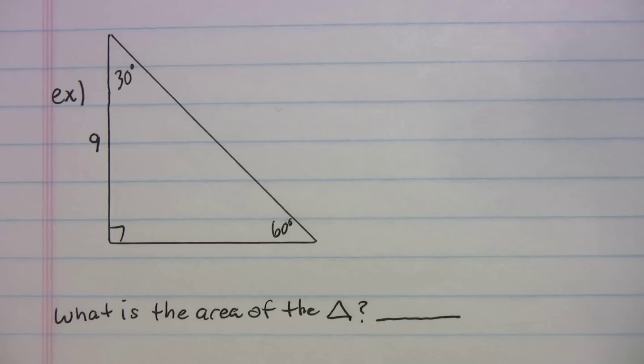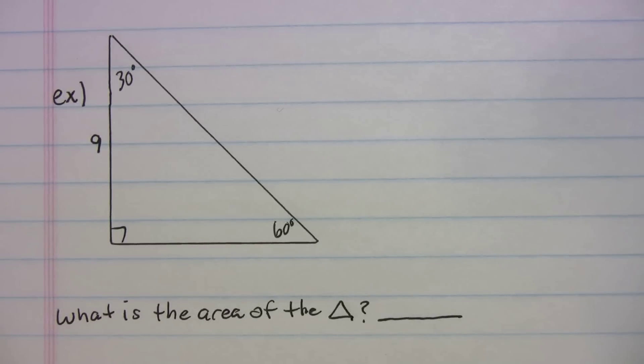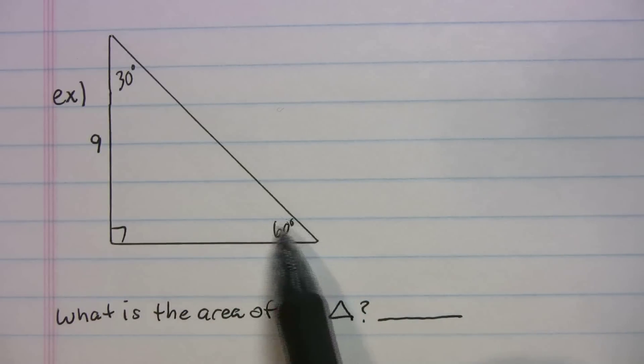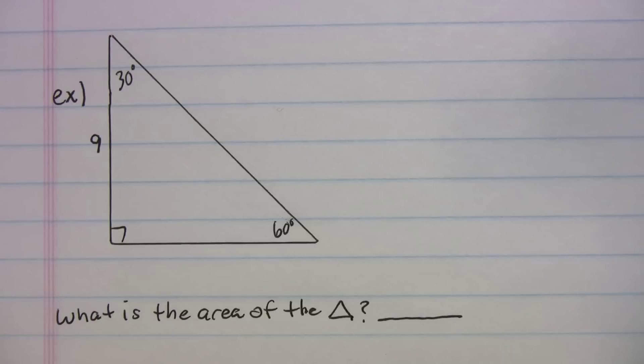So for this example, let me straighten that out. We got a 30-60-90. But now we have a side length that's opposite the 60. And you'll see why this is a little harder in a second.